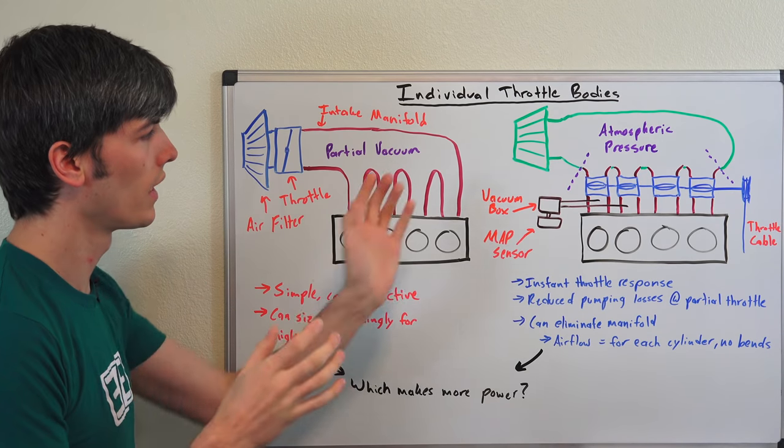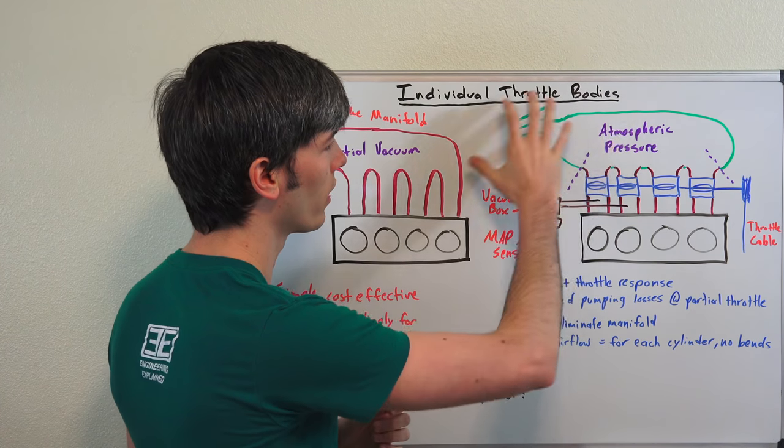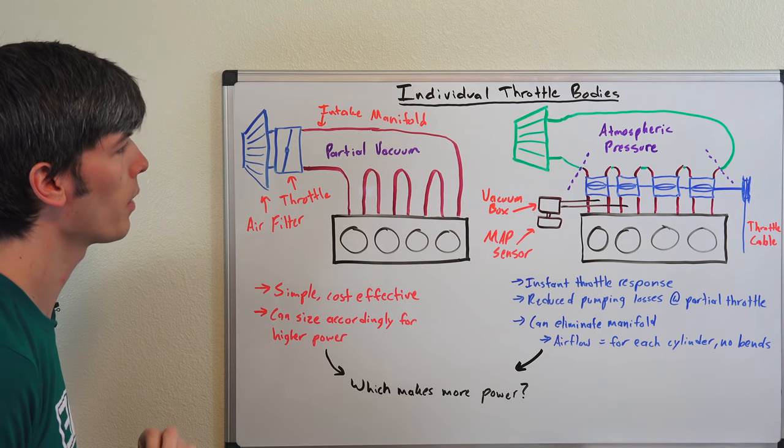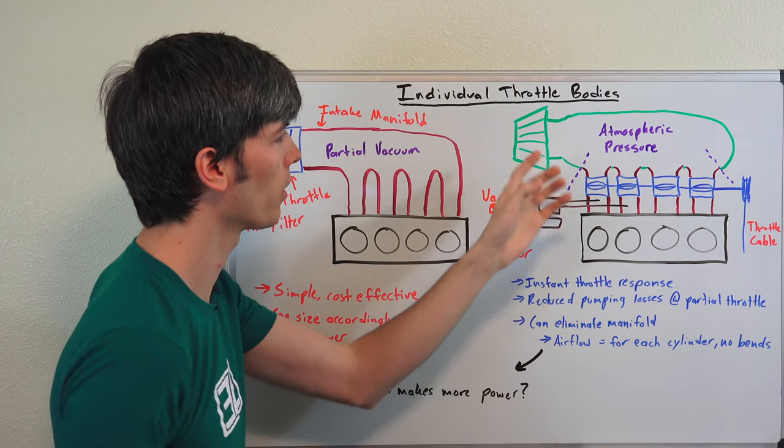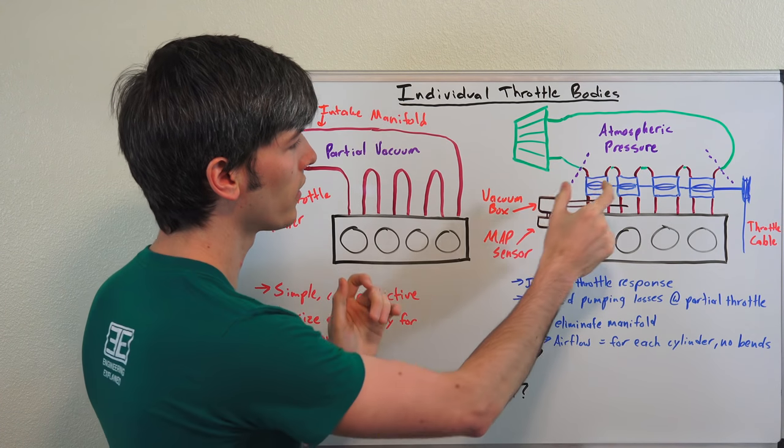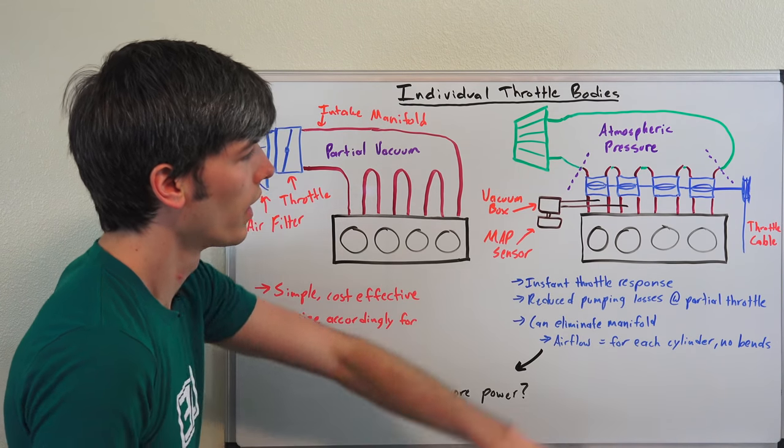Now with an individual throttle body, as the name suggests, each cylinder has its own throttle. So you can have this intake manifold just like this setup, and the air intake and all that, you won't have that throttle body right there before the intake manifold. Instead you'll have one placed at each of the intake runners for each of the cylinders.